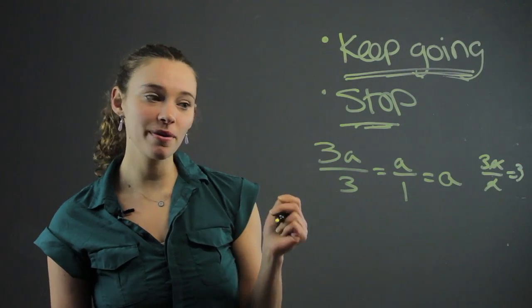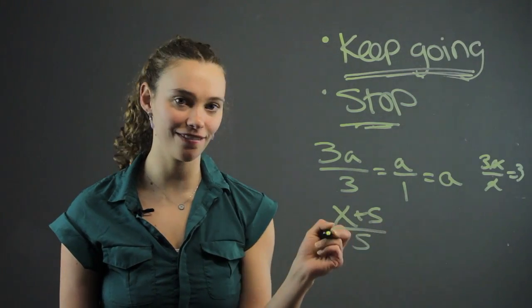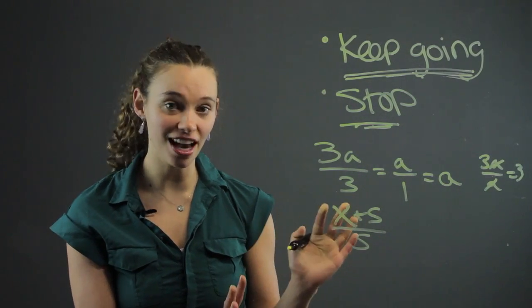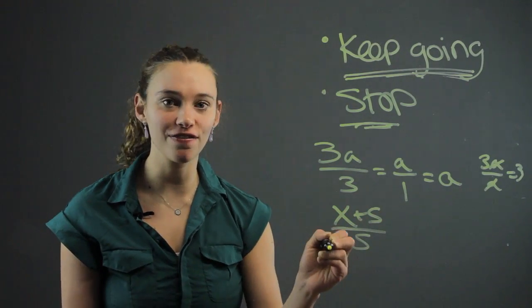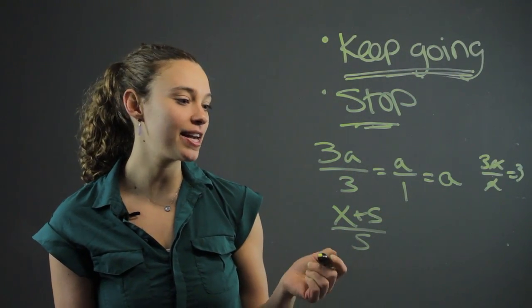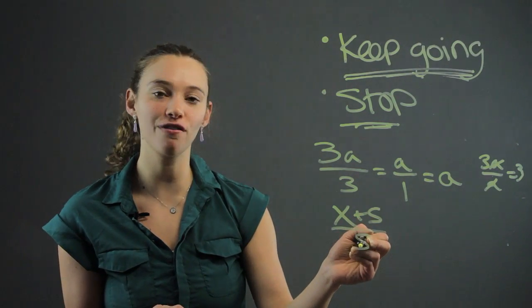Now, in terms of knowing when to stop, if you have something like x plus 5 over 5, stop here. You are done. People try and simplify it more by crossing off the fives, but you can't do this. Let's say this x is a 2, right? That's 2 plus 7 over 5.